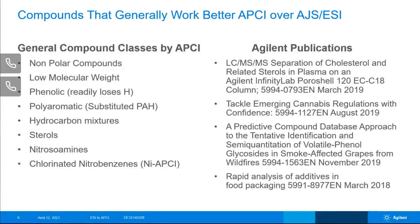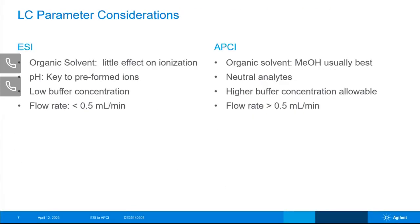On the right side of the screen we are listing some publications and application notes that Agilent has available, including some recent ones on nitrosamines. Now that we've talked about how you form ions by APCI, we discussed that the solvent for APCI can have an effect. So let's talk about some of the things you would consider for your LC separation that could improve your performance if you're using APCI versus ESI.